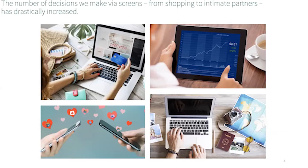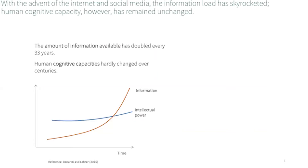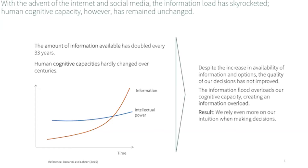While our local shoe store had three pairs of white sneakers in our size, online commerce may offer hundreds of white sneakers, maybe even reduced outlet or secondhand sneakers. So the tendency that we can observe is clearly an exponential expansion of available information. If we look at our cognitive capacities, we must note that they have hardly changed over hundreds of years. While up to a certain point additional options and information will help us make better decisions, once the information load passes our intellectual power this will impair the quality of our decisions. This is because the information flood overcharges our cognitive capacity, leaving us in a state called information overload.